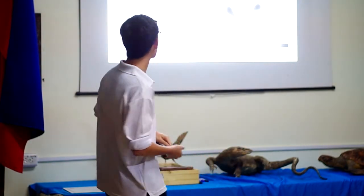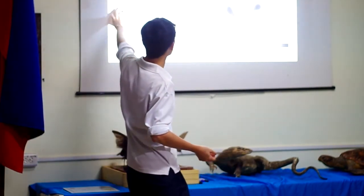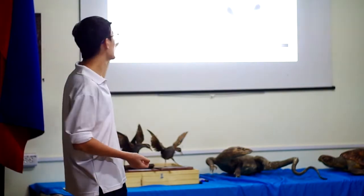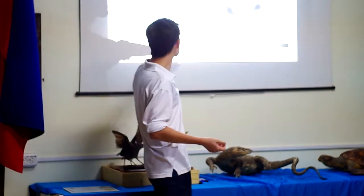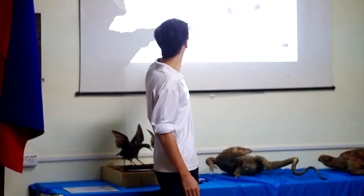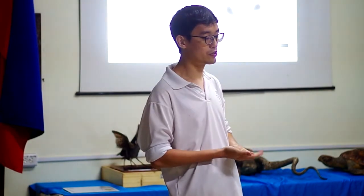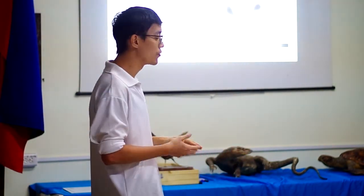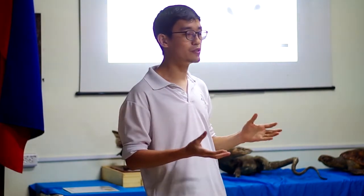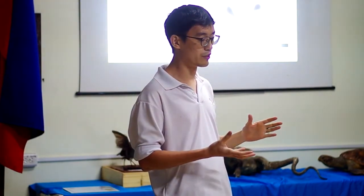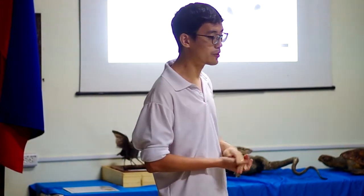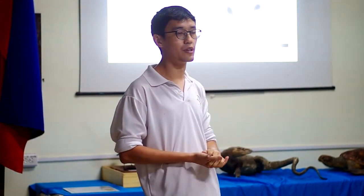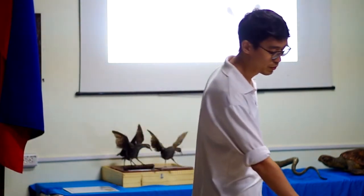This graph shows the cumulative number of species described over time. Since the 1980s, species discoveries have been soaring. If we already knew all the species in Southeast Asia, the graph would flatten out, but instead it is still shooting up — meaning there are still many species waiting to be discovered.